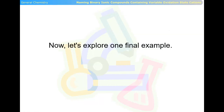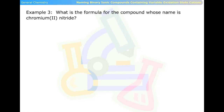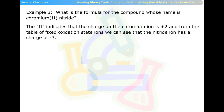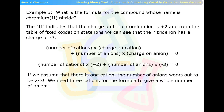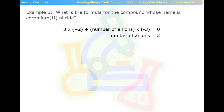Example three: What is the formula for the compound whose name is chromium(II) nitride? The two indicates that the charge of the chromium ion is positive two, and the nitride ion has a charge of negative three. If we assume one cation, the number of anions works out to be two thirds. We need three cations for the formula to give a whole number of anions. Three times positive two plus the number of anions times negative three equals zero, so the number of anions equals two. The formula of this compound is Cr3N2.